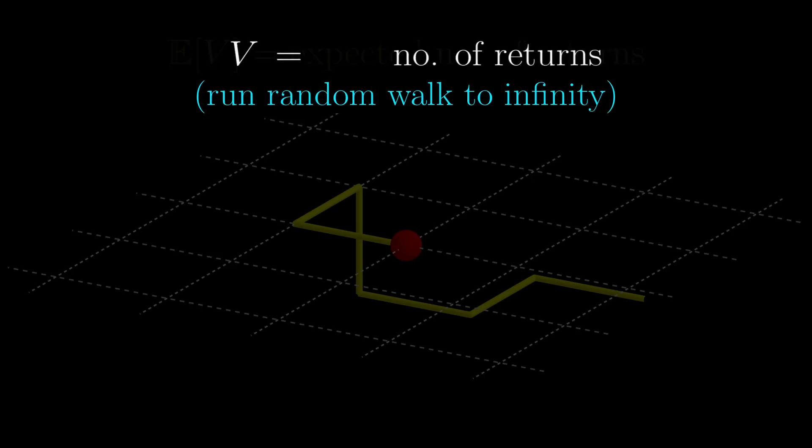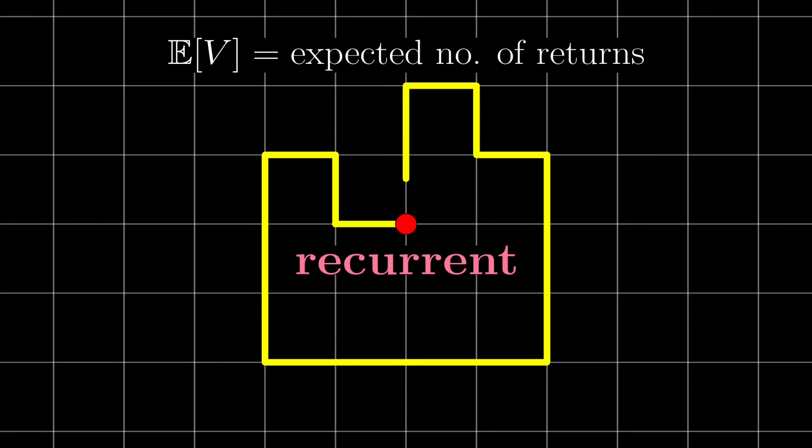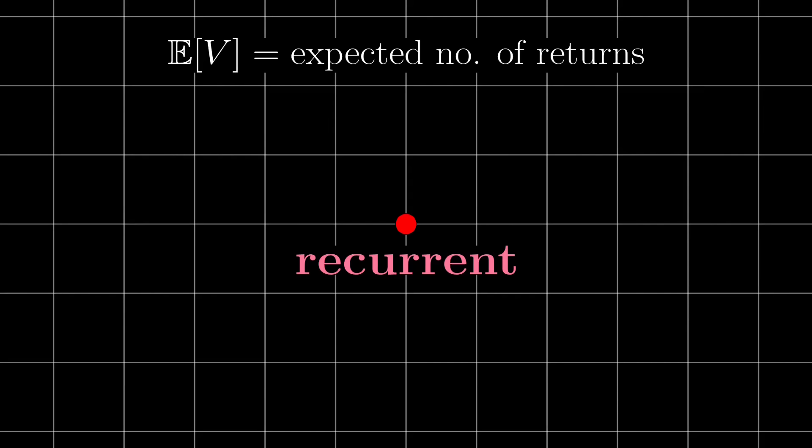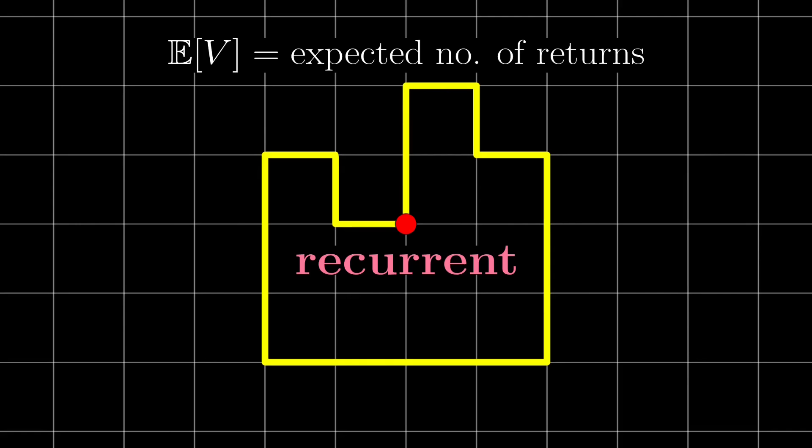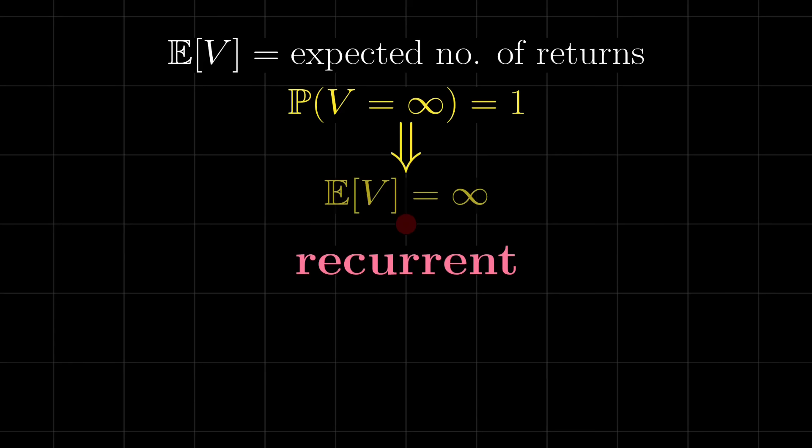Now for the recurrent case, we are guaranteed to go back, but if we continue to run the random walk by the Markov property, we should have forgotten that we have returned, and then we will for sure return to the origin again, and again. So the number of returns V is guaranteed to be infinite, and the expectation would also be infinite. That is when the state is recurrent.